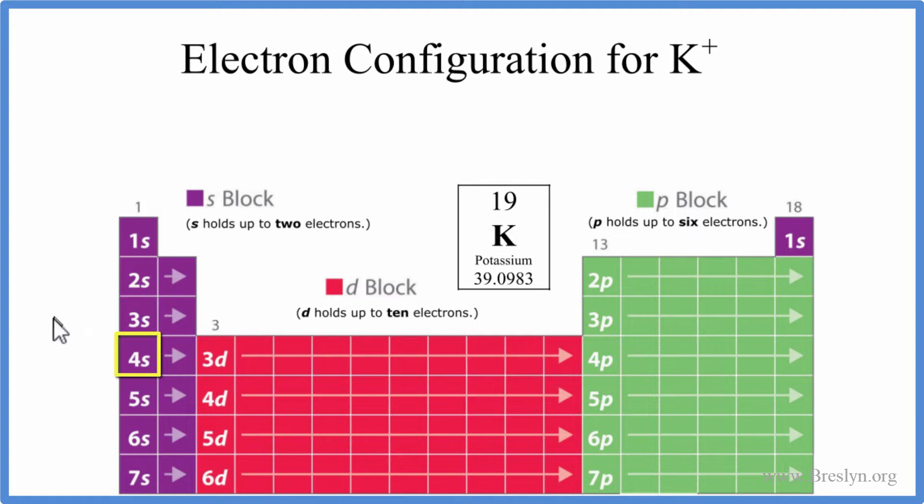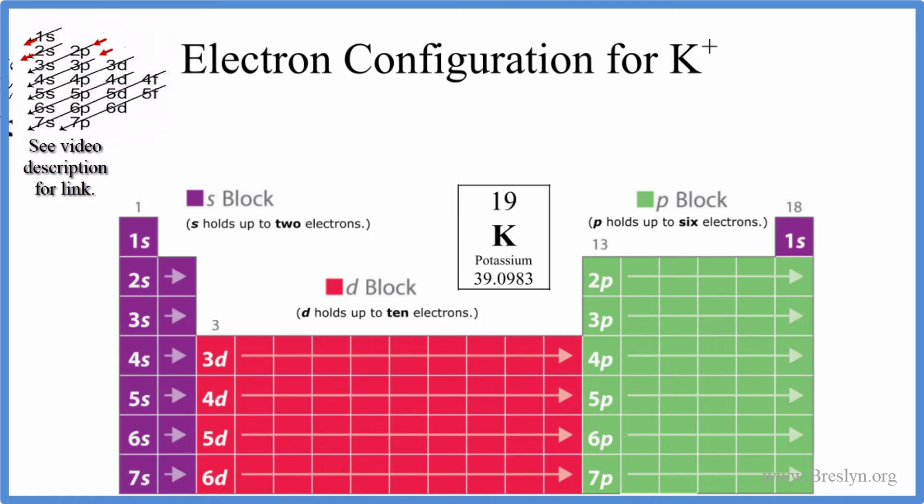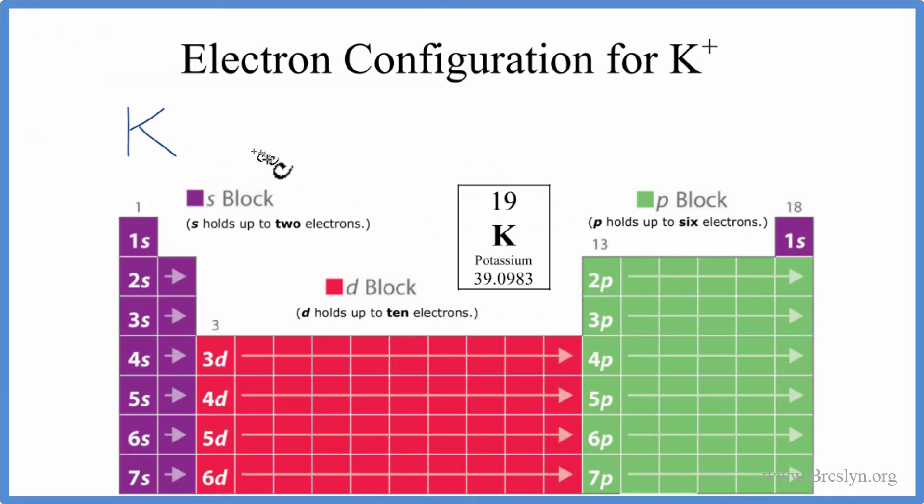So let's spread those out around the nucleus. That's what we do with electron configurations. We'll use the periodic table here. You can also use this chart up here. There's a link to how to do that in the description. But I like this, I think this makes a lot more sense. So we have 19 electrons for just neutral potassium.